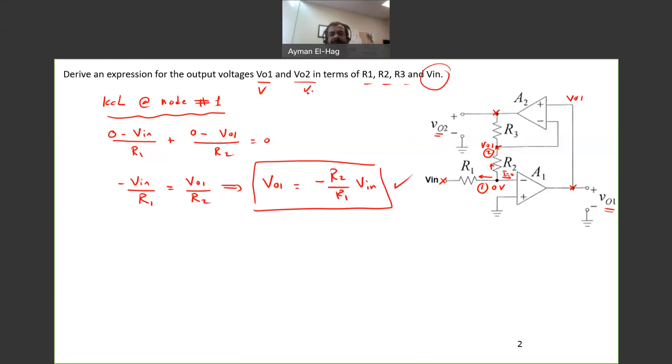Now we need to find VO2. So we'll apply KCL. KCL at node number 2. So again here, this current, I, is equal to 0.